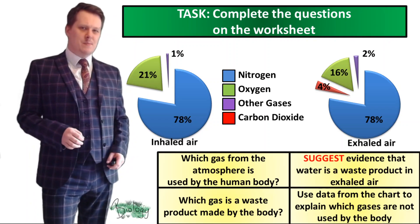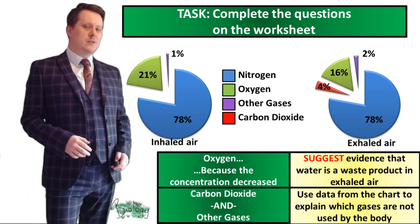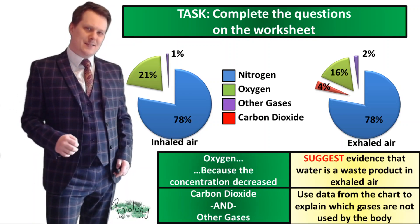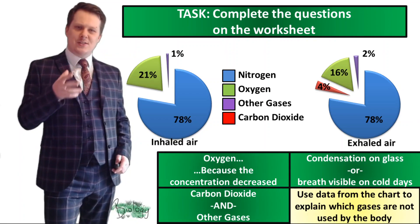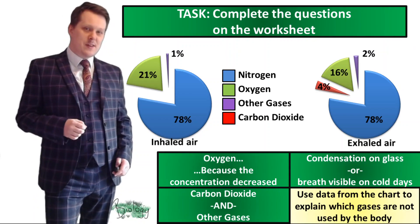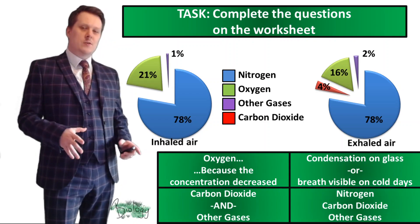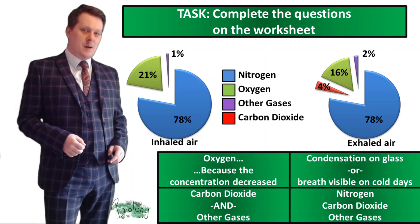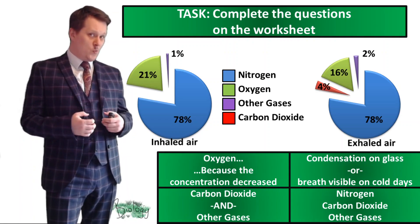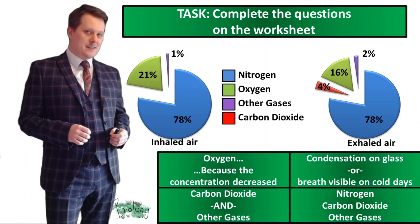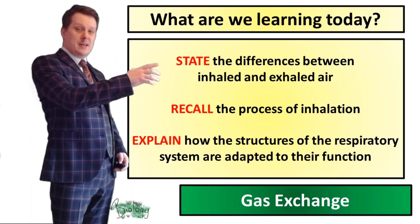Which gas from the atmosphere is used by the human body? That's oxygen, because it decreased from 21% to 16%. Which is a waste product? Looking at the diagram it's carbon dioxide and the other gases. What's the evidence for the other waste product? It's water vapour — that condensation on the glass, which you can even see on a cold day when you breathe out. Using data from the charts to explain which gases aren't used by the body: nitrogen stays the same at 78%; carbon dioxide increased from 0.04% to 4% — we haven't used it, we've produced it. The other gases increased from 1% to 2% — we've produced those too.